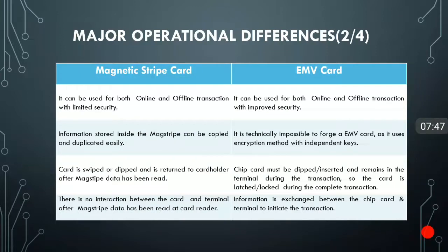The magnetic stripe card can be used for both online and offline transactions with limited security. Both magnetic stripe and EMV can be used for online and offline, but predominantly online is used. The major difference is that magnetic stripe has limited security while EMV has improved security. Information on a magnetic stripe can be easily copied — data can be replicated or skimmed — but in case of EMV it is technically impossible, as it uses an encryption method with an independent key generated by the issuing bank.